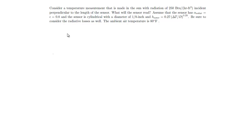In this video we go over a problem dealing with sensors in the sun. The problem considers a temperature measurement made in the sun with radiation coming in at 250 BTU per hour per foot squared, incident perpendicular to the length of the sensor. The sensor has an absorptivity and emissivity equal to 0.8, is cylindrical with a diameter of one-eighth of an inch, and we're given a correlation for the convection coefficient. Be sure to consider radiative losses. The ambient air temperature is 80 degrees Fahrenheit. This problem is really all about setting up the energy balance.